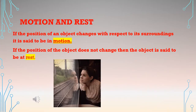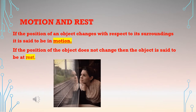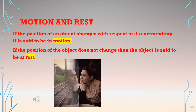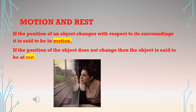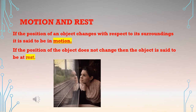Motion and rest: if the position of an object changes with respect to its surroundings, it is said to be in motion. If the position of the object does not change, then the object is said to be at rest.